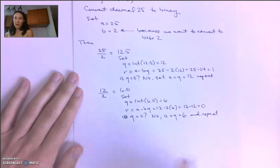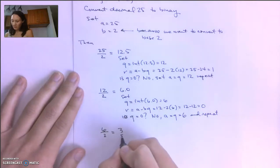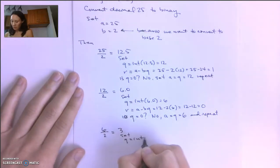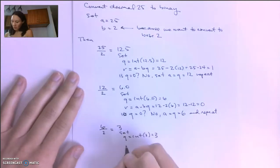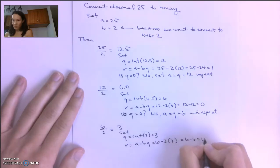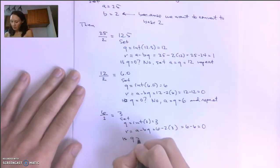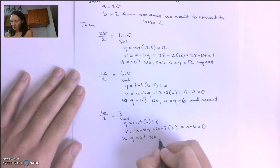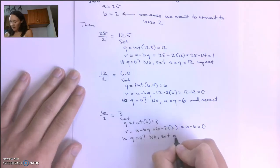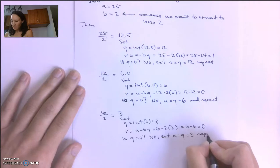So then we take 6 and divide by 2. We get 3. So we set Q equal to the integer part of 3, which is just 3. We set R equal to A minus BQ, which is 6 minus 2 times 3, which is 6 minus 6, so our remainder is 0. Is Q equal to 0? Our Q is 3, so the answer is no. So we set A equal to Q equal to 3, and repeat.